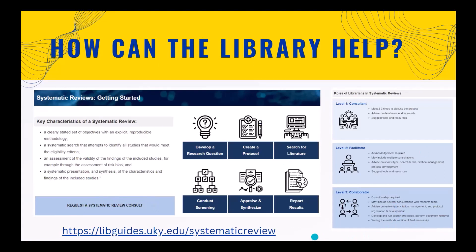We suggest that you fill out a 'request a systematic review consult' form as your first step in getting assistance. We have three different levels of help. Level one is consultant — we meet two to three times, discuss your project and needs, and suggest tools and resources. Level two is facilitator, which may include multiple consultations; we advise on review type, search terms, and citation management, and we ask for an acknowledgement in your paper or grant proposal.